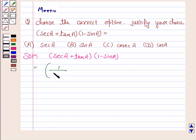Now secant A can be written as 1 upon cos A. Tan A can be written as sin A upon cos A into 1 minus sin A.